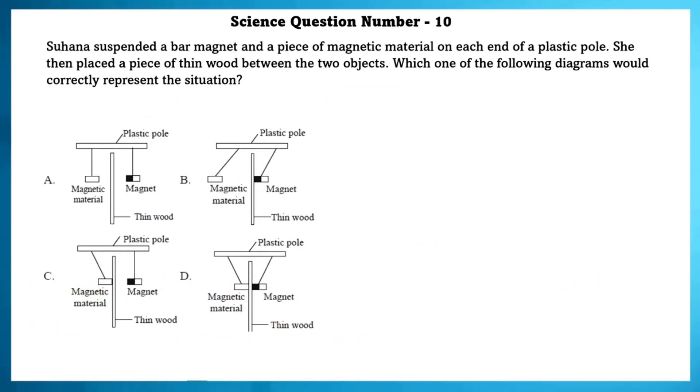Science question number 10. Suhana suspended a bar magnet and piece of magnetic material on each end of the plastic pole. She then placed a thin wood between the two objects. Which of the following diagrams would correctly represent the situation? The magnet attract magnetic material and try to stick with the magnet. So, the correct possible situation would be the D option.